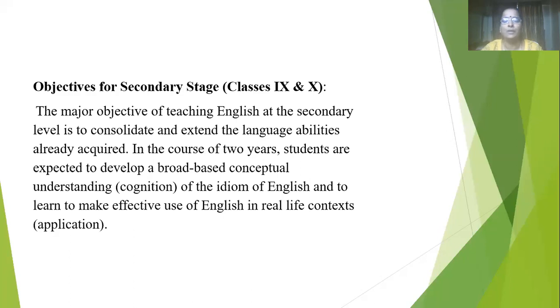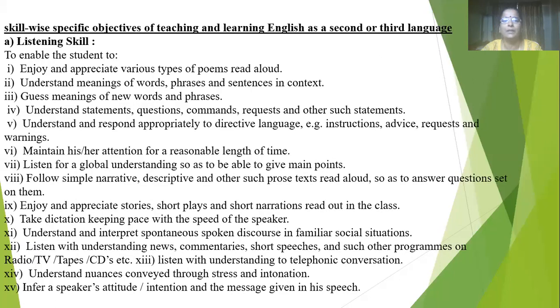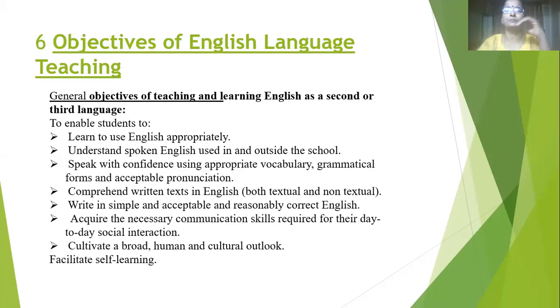Any topic taught to students should be application-oriented. For 11th and 12th grade higher secondary classes, the objectives related to literature include writing of playwrights, writing of scripts, understanding and comprehension of poems, and asking students to write or compose their own poems. These are the different objectives of teaching English as a first language at the higher secondary level.